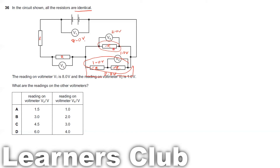The remaining voltage is 8.0V minus 2.0V = 6.0V. This is shared between two identical resistors, so 6V ÷ 2 = 3.0V each. Therefore V3 = 3.0V and V4 = 2.0V, giving answer option B.